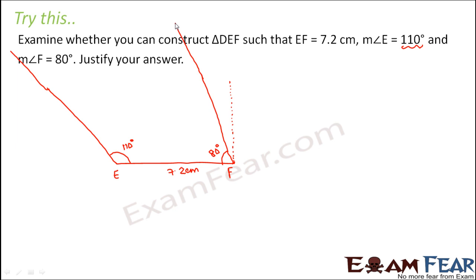Why is it so? First of all, if they do not meet, will you ever get the point D? No. You will never get point D. So will you ever get the triangle DEF? No. So that means we cannot draw triangle DEF with this measurement.